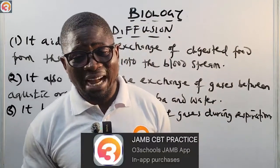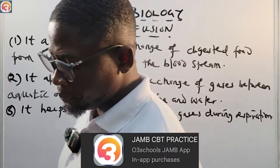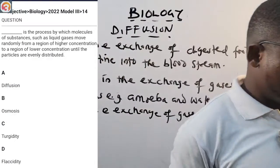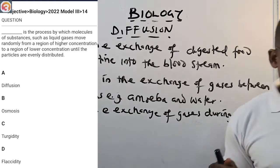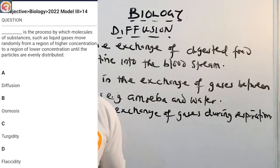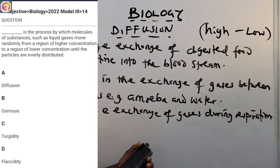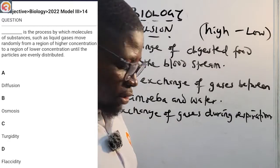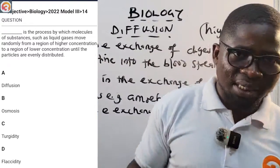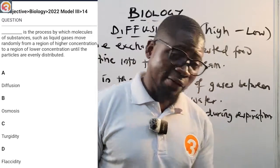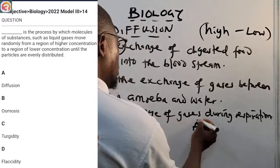Now let's look at a 2022 JAMB question — question number four — from the O3 School Jam app. It says: 'Dash is the process by which molecules of substances such as liquids and gases move randomly from a region of high concentration to a region of lower concentration until the particles are evenly distributed.' The options are A) diffusion, B) osmosis, C) turgidity, D) flaccidity. The correct answer is A — diffusion. Note: if the movement were from low to high concentration, we'd be talking about osmosis.